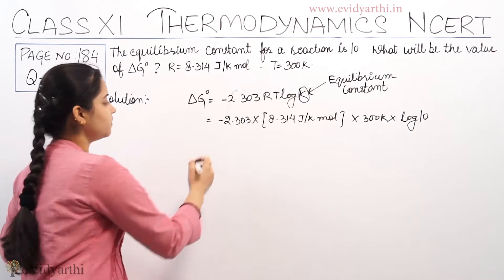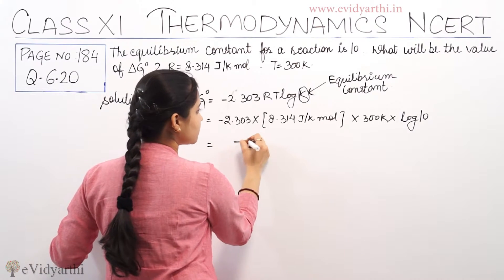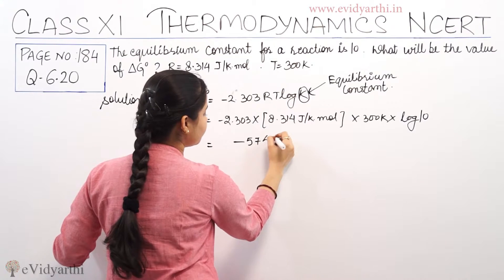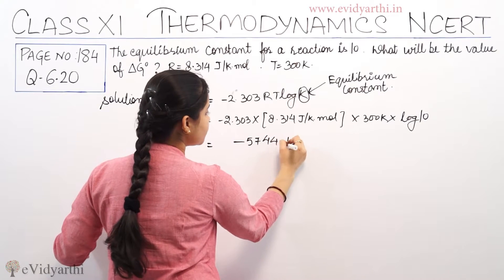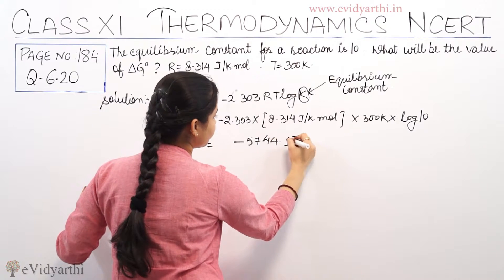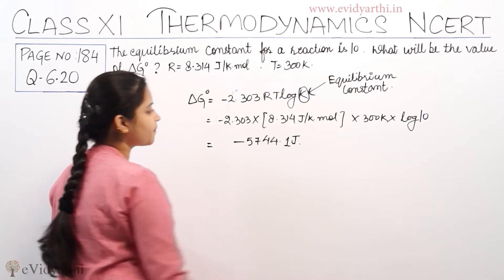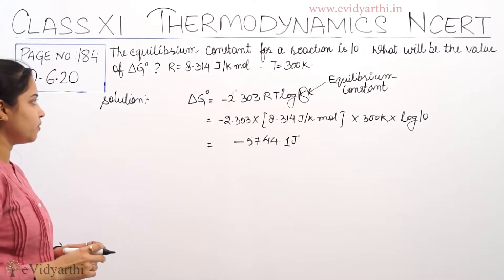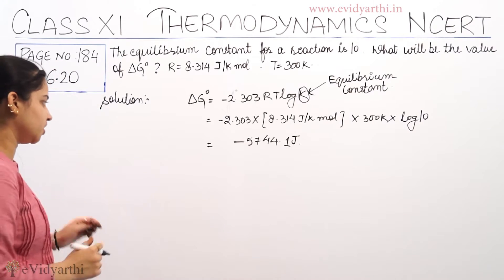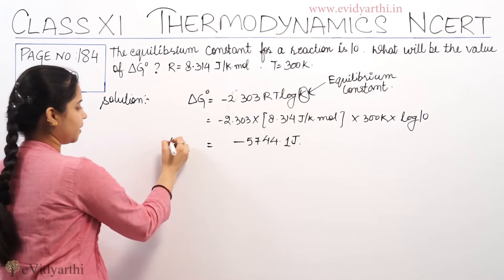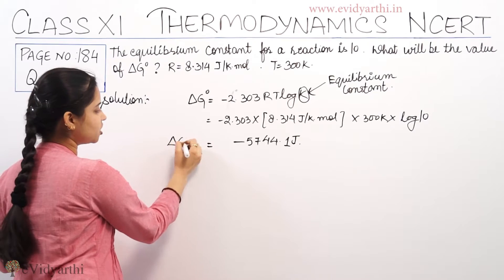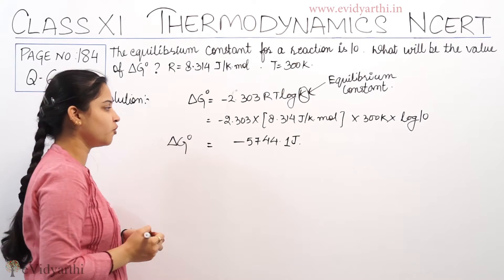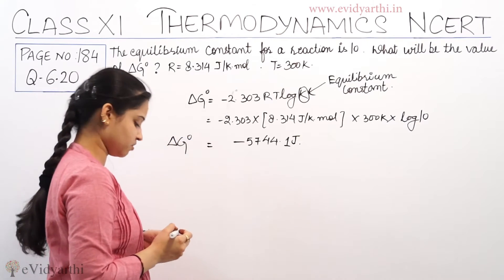So, what we will be getting is minus 2.303 into 8.314 into 300 into log 10, which gives us minus 5744.1 joules. This will be the value of standard Gibbs free energy. Delta G naught is equal to minus 5744.1 joules.